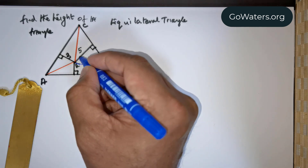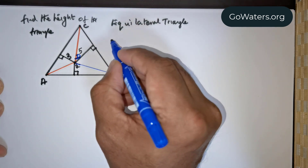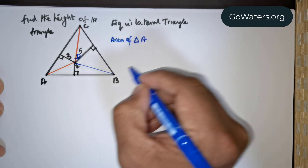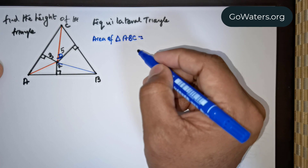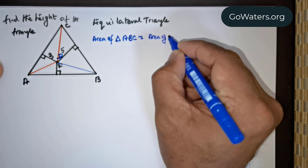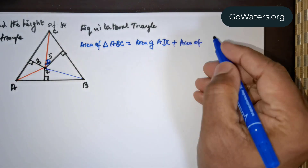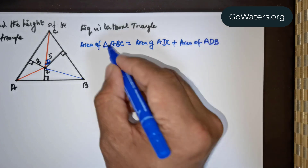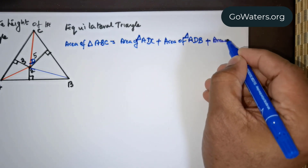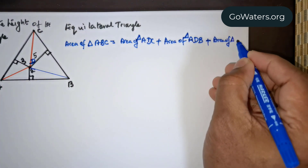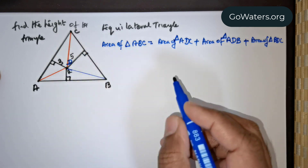Now what I wish to do is name this interior vertex as D. So if I were to find the area of triangle ABC — this entire triangle — then I can state that this area is nothing but area of triangle ADC plus area of triangle ADB plus area of triangle BDC. This is obtained from the figure.